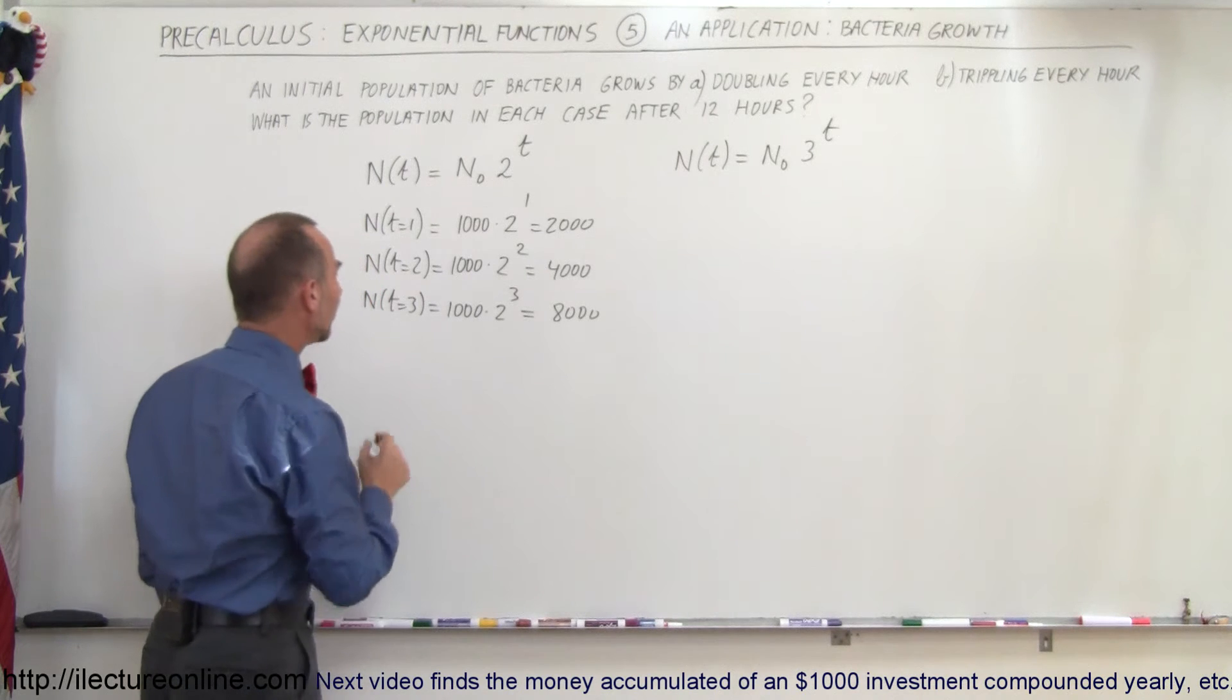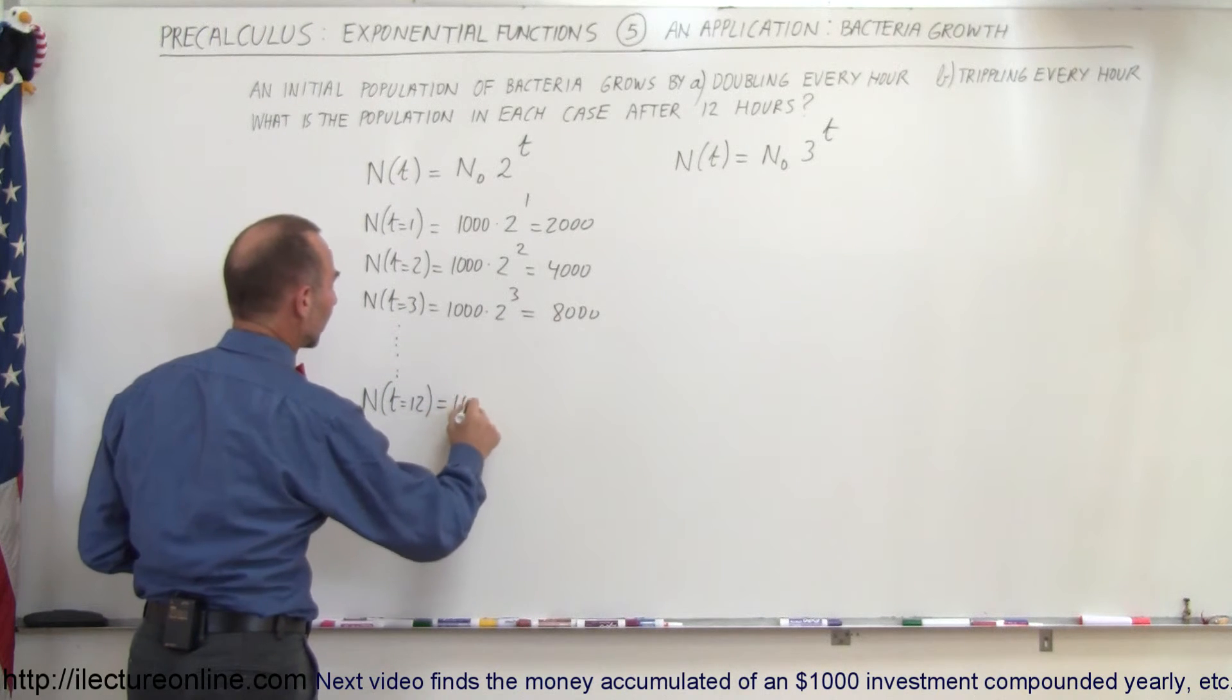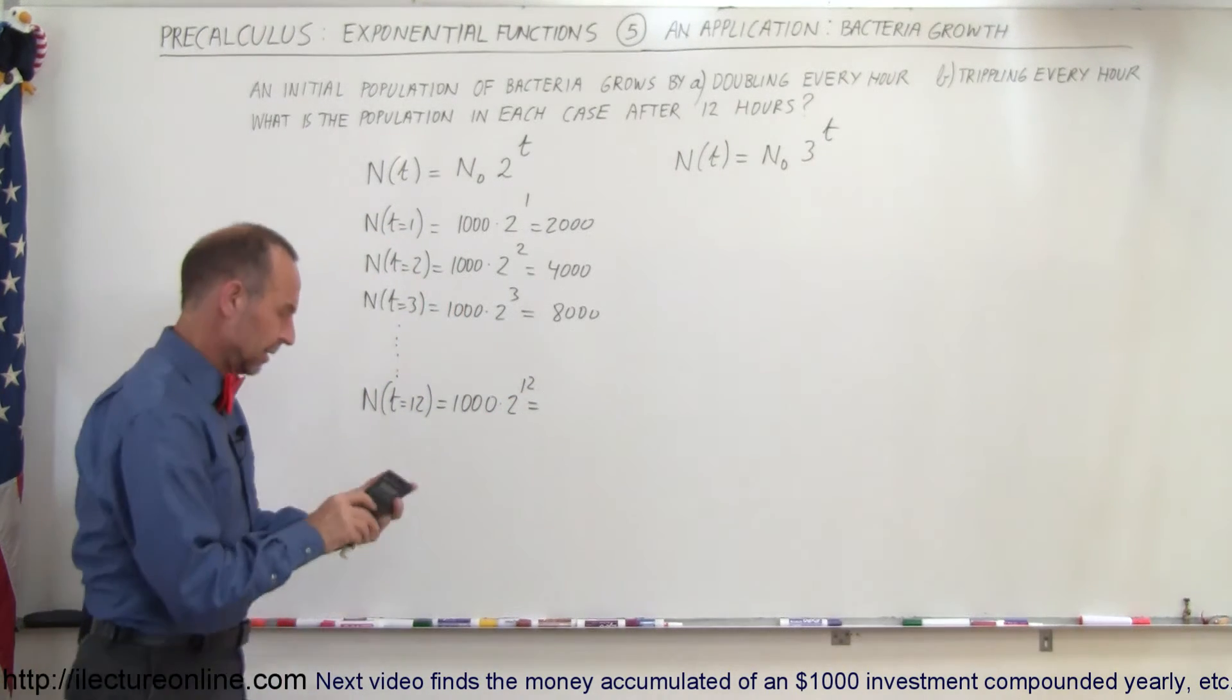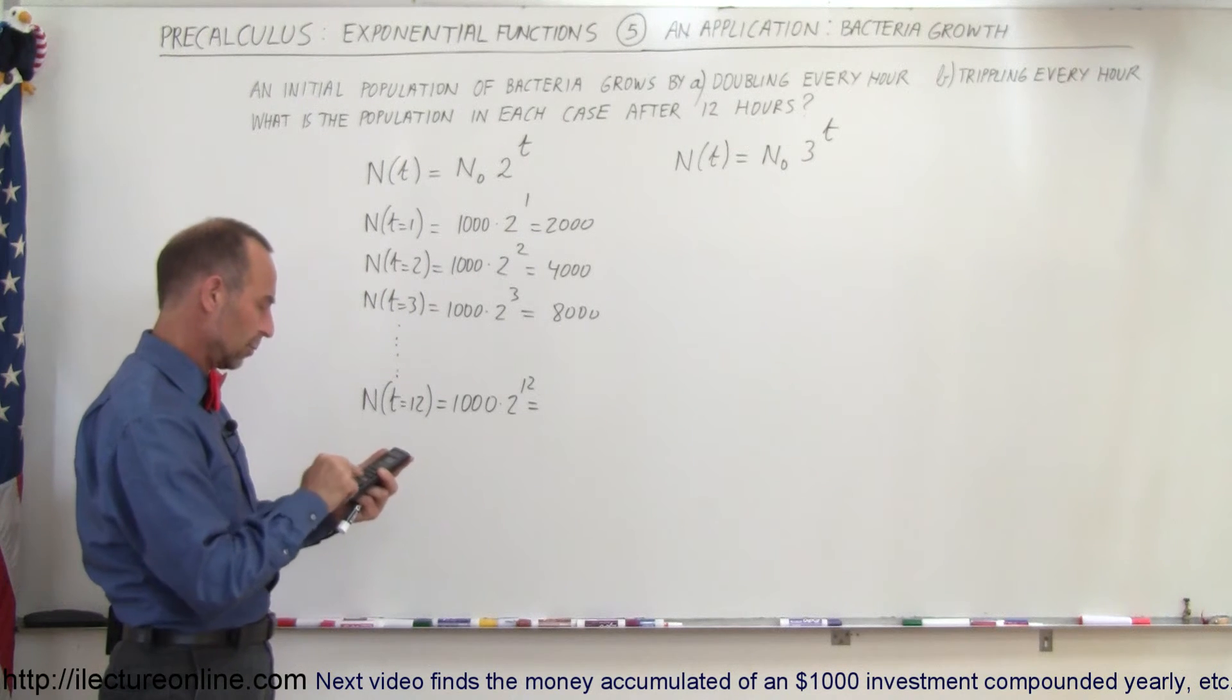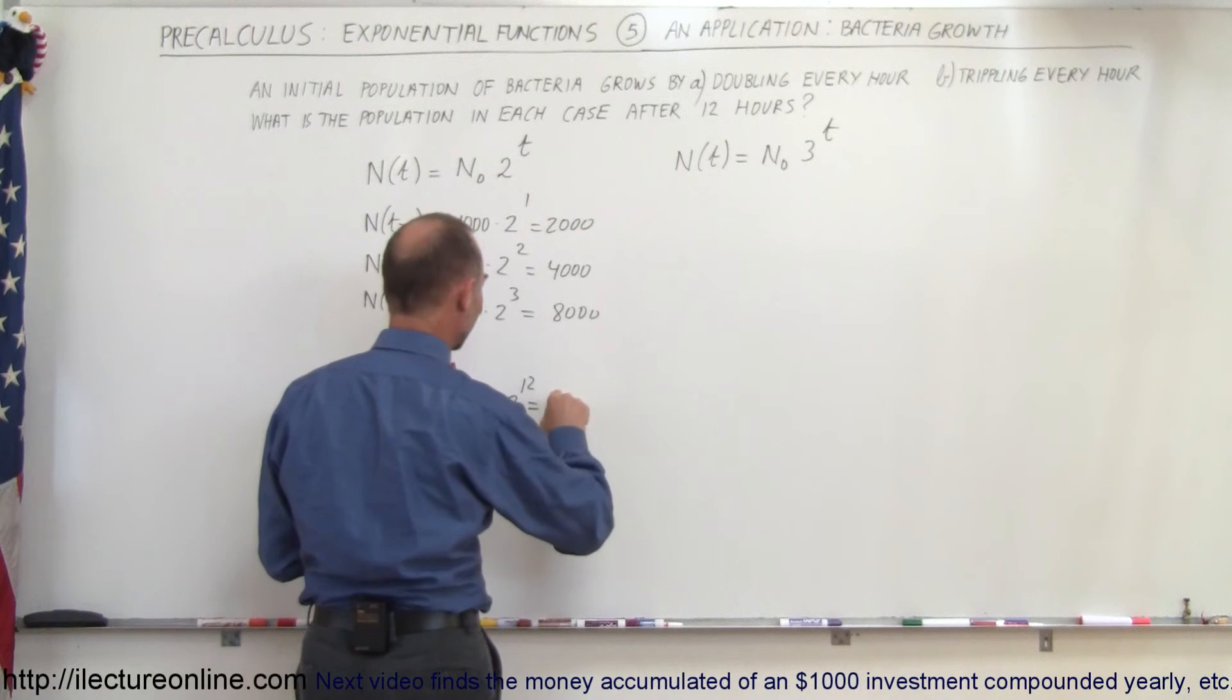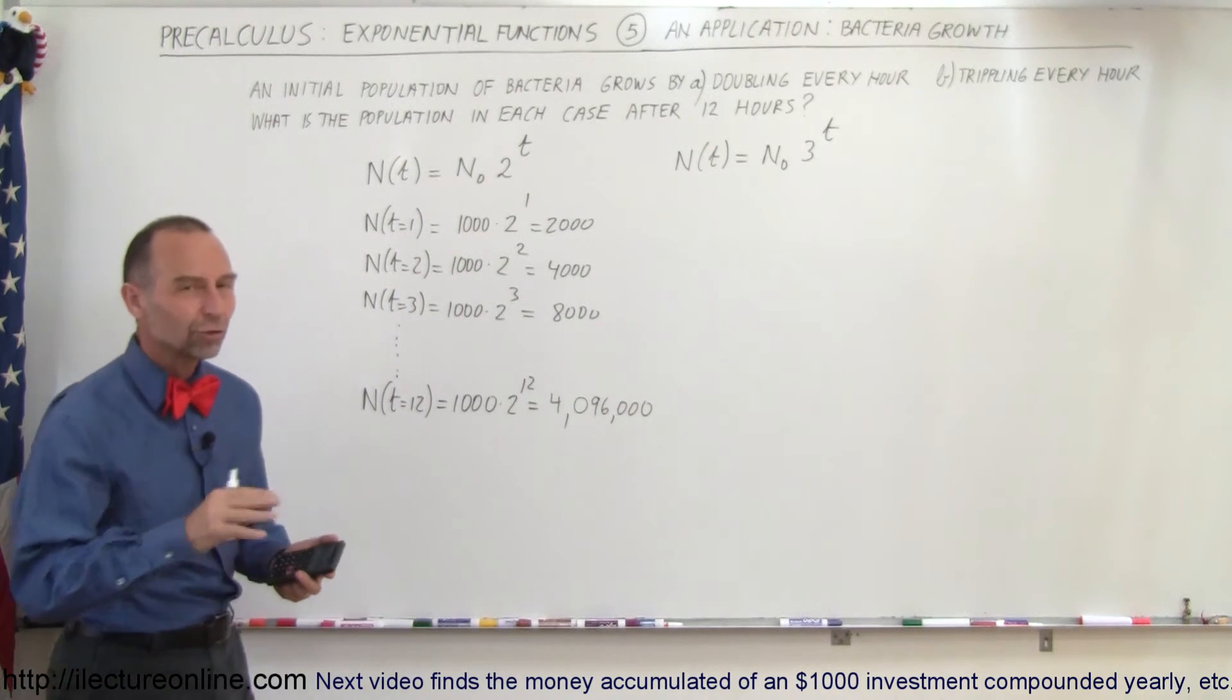What would it be after 12 hours? When t equals 12, we have 1000 times 2 raised to the 12th power. For that, we're going to need a calculator. 2 raised to the 12th power is 4096, times 1000, that's 4,096,000 bacteria. That's the case where the population doubles every hour.